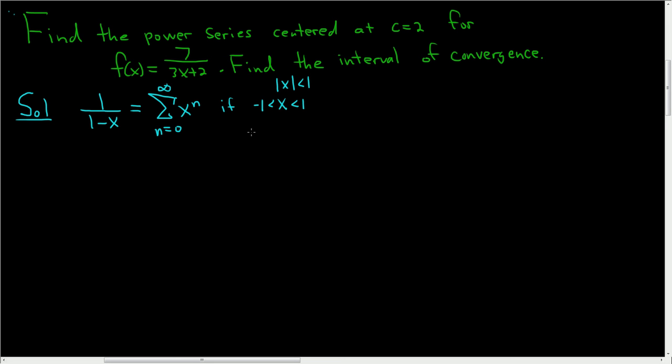Now another way to state this condition is to say that the absolute value of x is less than 1. This is basically a geometric series. And recall that this diverges if the absolute value of x is greater than or equal to 1.